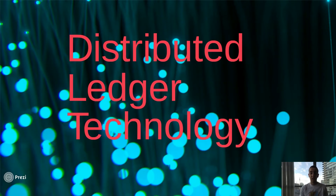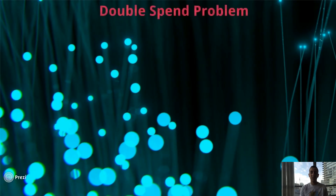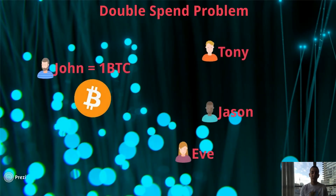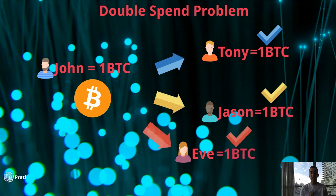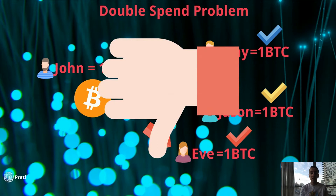The need for securing the network derives from the double spend problem. In a decentralized system, one could spend their tokens many times before other parties could check and perform security measures. Of course, we are talking about technology without consensus algorithms. We have them to perform double spend checks. After implementing those algorithms, only the first transaction is valid, or the transaction with higher fees, depending on the network. So the consensus is between all parties to establish which transaction is valid and which isn't.